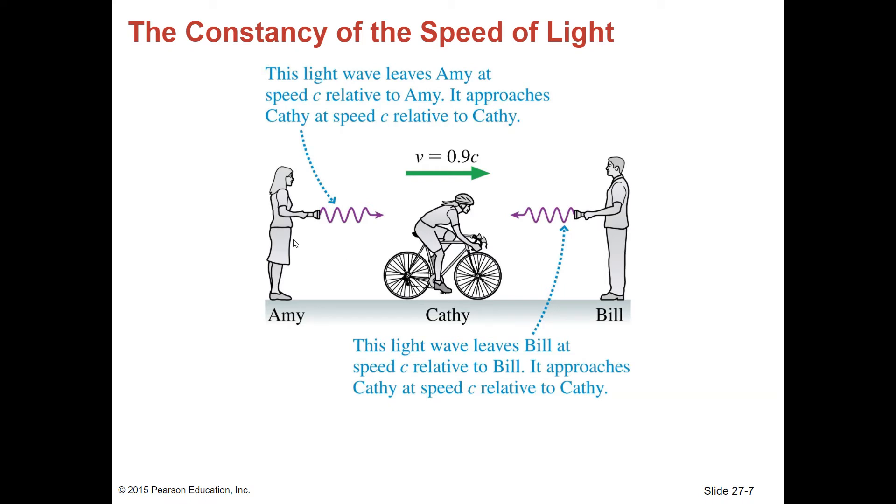Here we have a picture. You have Amy. This light wave leaves Amy at speed C relative to Amy. It approaches Cathy, even though Cathy's moving, at speed C relative to Cathy.